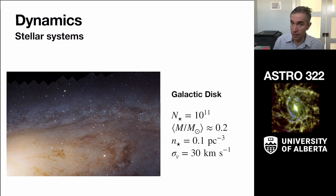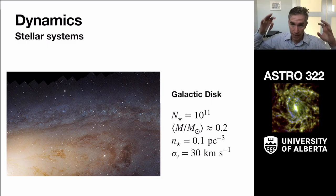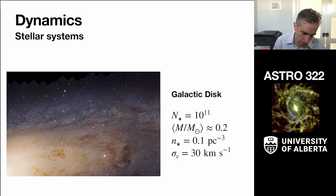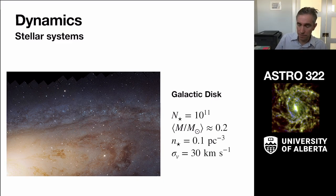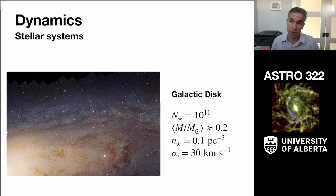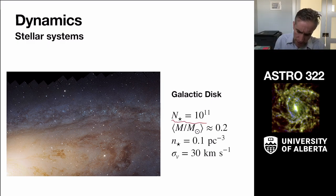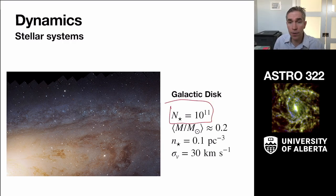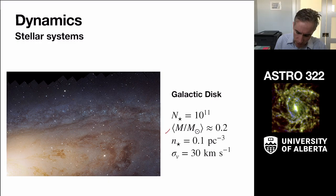We see lots and lots of individual stars, and they're all moving with respect to each other — orbiting the galaxy, streaming around the center. We want to think about the physics of this system. A typical galactic disk has about 100 billion stars — 10 to the 11 — with an average mass of about 0.2 solar masses, slightly smaller than the IMF average because high-mass stars are lost to stellar evolution.